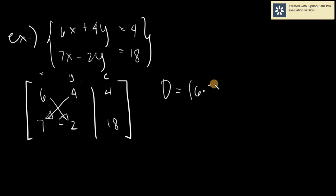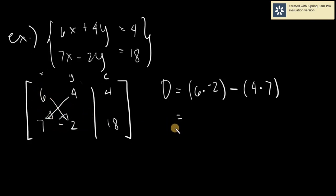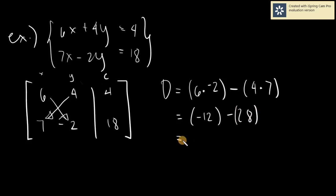You will have 6 times negative 2 and 4 times 7, and then you need to get the difference of them. It's very important to know the order — the first diagonal goes down to your right. So we will have 6 times negative 2, the answer is negative 12, minus 4 times 7, the answer is 28. Negative 12 minus 28 gives us negative 40.